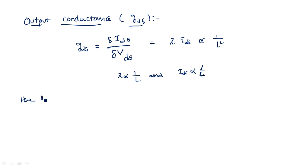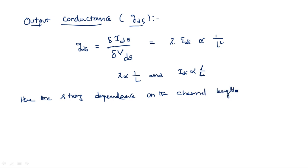This shows the strong dependence of output conductance on the channel length. Lambda is proportional to 1 by L and Ids is proportional to 1 by L, so Gds is proportional to 1 by L squared. These are the output conductance depending parameters. These are the transconductance and output conductance of the MOS transistors.